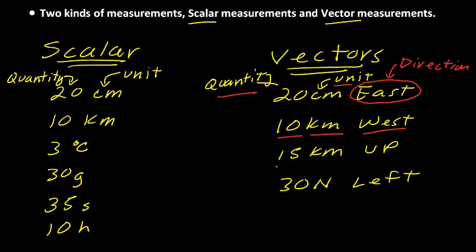15 kilometers up has a quantity, a unit of measurement, and a direction. It doesn't have to be a map direction — north, south, east, or west. It can be some other direction: up, left, right, or towards John's house. All vector measurements include those three things: a quantity, a unit of measurement, and some kind of direction. And that's what separates vector measurements from scalar measurements. The difference is that vectors include a direction.